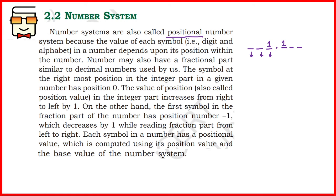Any number system — not only decimal, but binary, hexadecimal, and octal as well — can also have fractional parts. We will see how to compute the values of the integral and fractional parts of all four number systems when we study them in detail in upcoming lectures. The position to the left of the decimal represents the integer part, and to the right represents the fractional part. The position just to the left of the decimal point has a power or position of 0, and as we go from right to left on the integer side this position increases by 1.